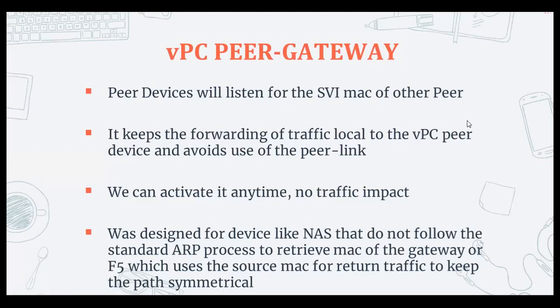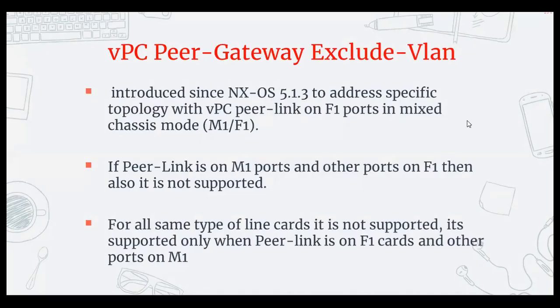Going back to the slides: VPC Peer Gateway — peer devices listen for the SVI MAC of the other device once the feature is enabled, in addition to the virtual MAC. Second, it keeps forwarding local to the VPC peer device and avoids using the peer link. Third, it can be activated at any time without disruption. Finally, it was designed for devices like NAS that do not follow the standard ARP process to retrieve the gateway MAC, and for F5 devices that use source MAC tracking to keep the return path symmetrical.